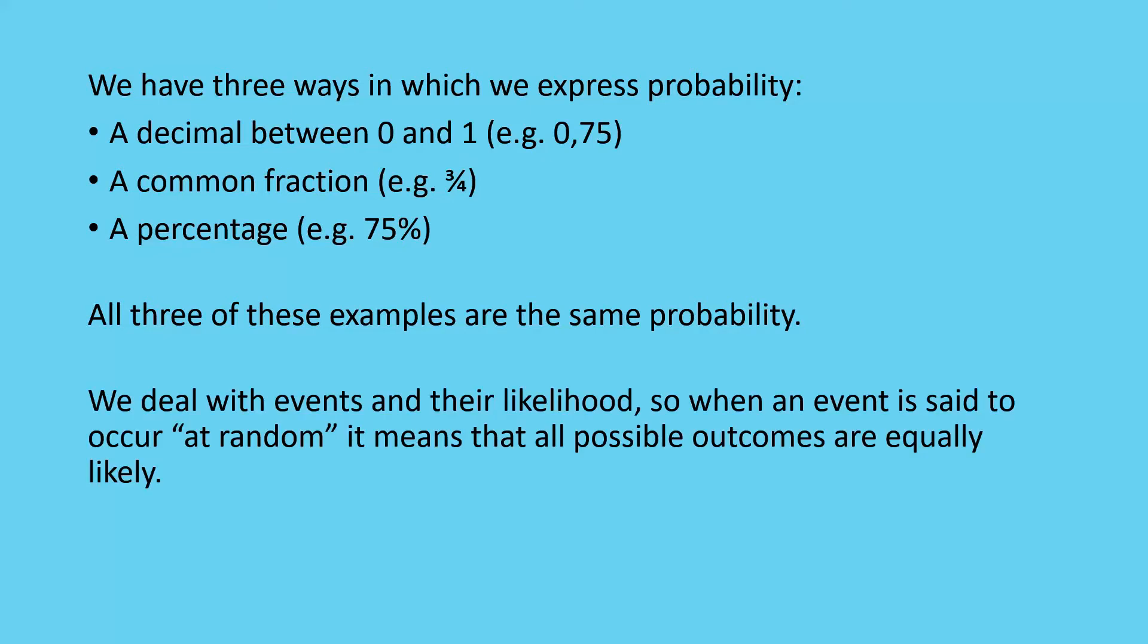So when we deal with events, we look at their events and their likelihoods. So when events are set to occur at random, it means that all possible outcomes are equally likely. It's equally likely that if you flip a coin, you are going to get a heads or a tails. It's equally likely because there are only two choices there.